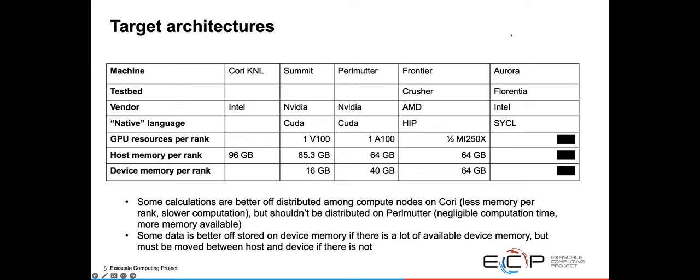Our target architectures are Perlmutter and Cori, Summit, and then Frontier and Aurora in the future. An interesting thing is they all have different native languages: CUDA for NVIDIA, HIP for Frontier, SYCL for Aurora, but also different amounts of host memory and device memory. Because of this, some calculations are better off being distributed among compute nodes on Cori where there's less memory per rank and slower computation, but shouldn't be distributed on Perlmutter where computation time is negligible and there's more memory available. In other situations, it might be better to store data on the device or on the host if there's not enough room on the device. The challenge is having a single code that can do those things.